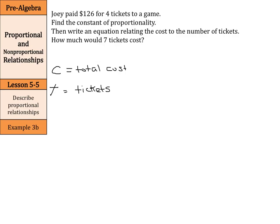As we go to find our constant of proportionality, we have $126 for four tickets. What we want to find is the cost for one. If we take our $126 and divide by four, you would find $31.50 for one ticket. That's our constant of proportionality, $31.50.